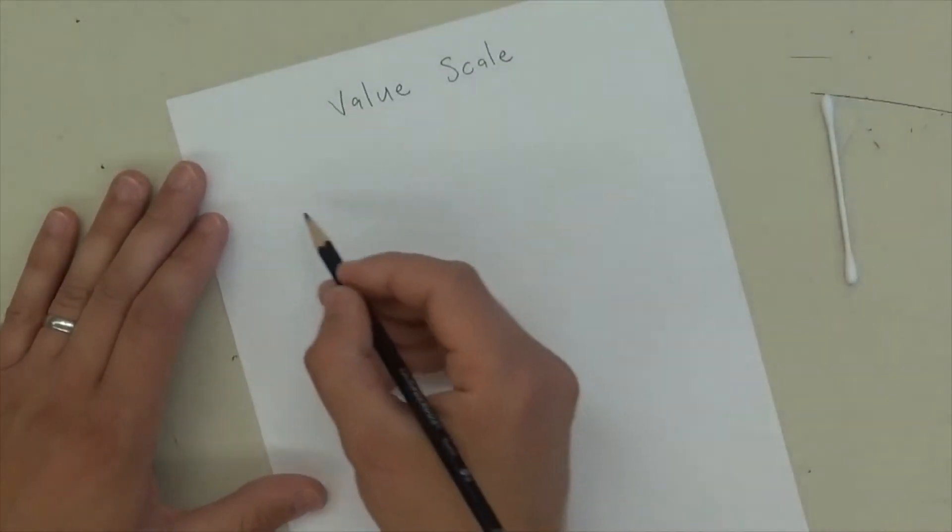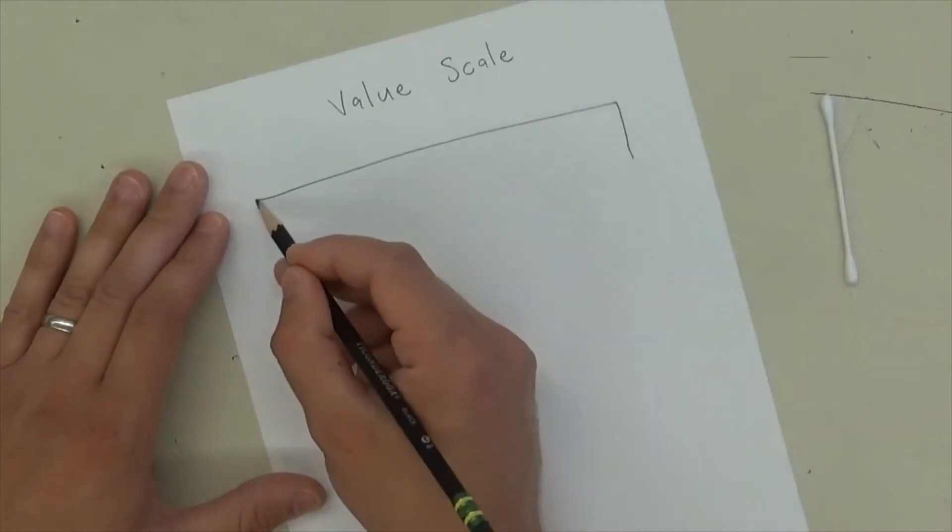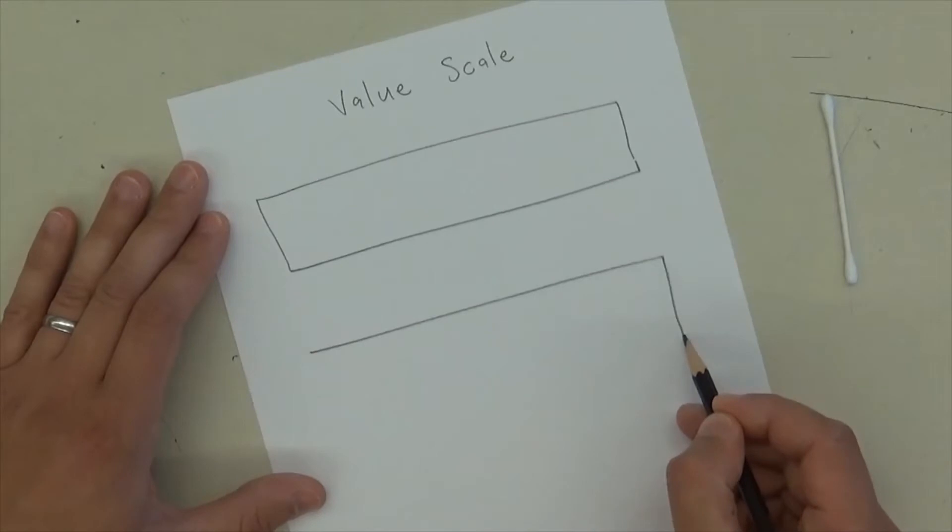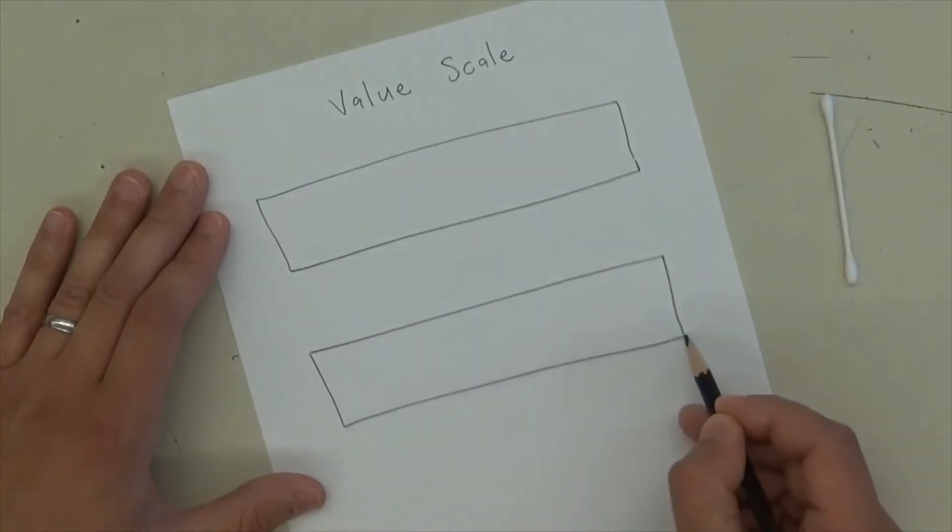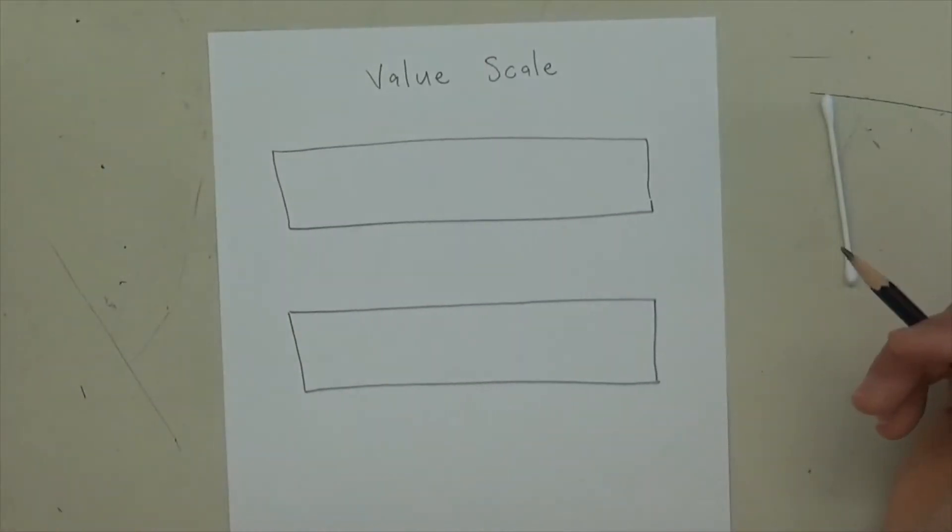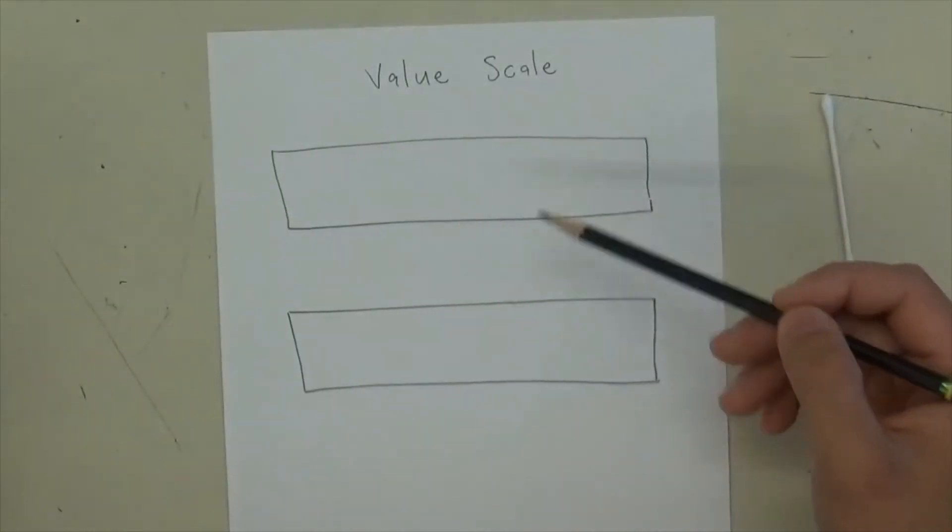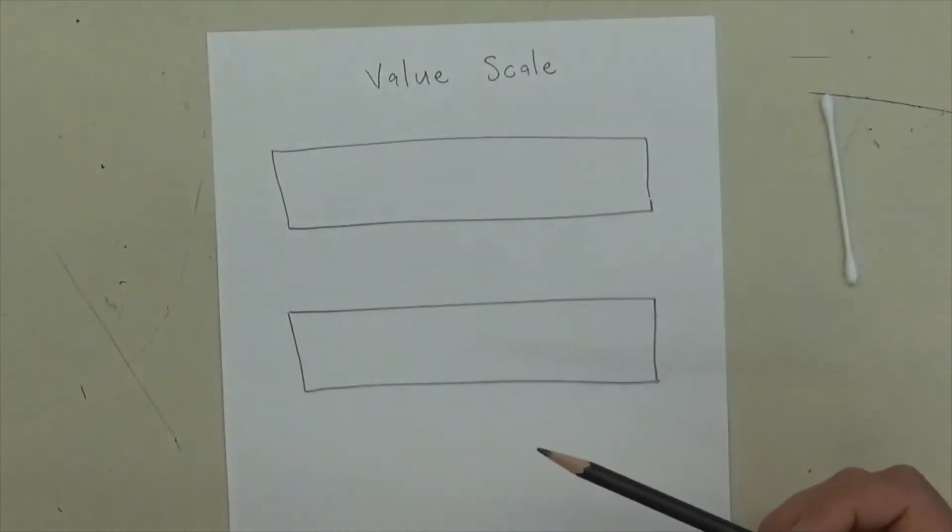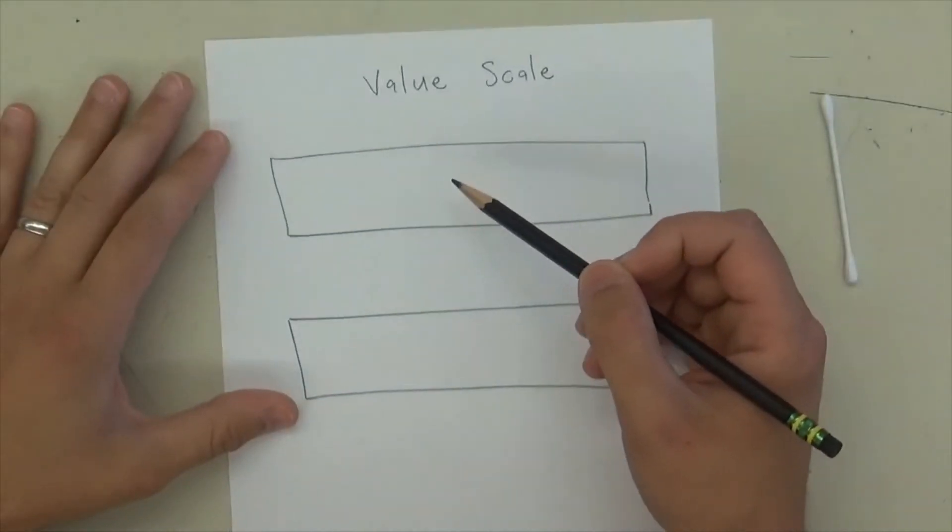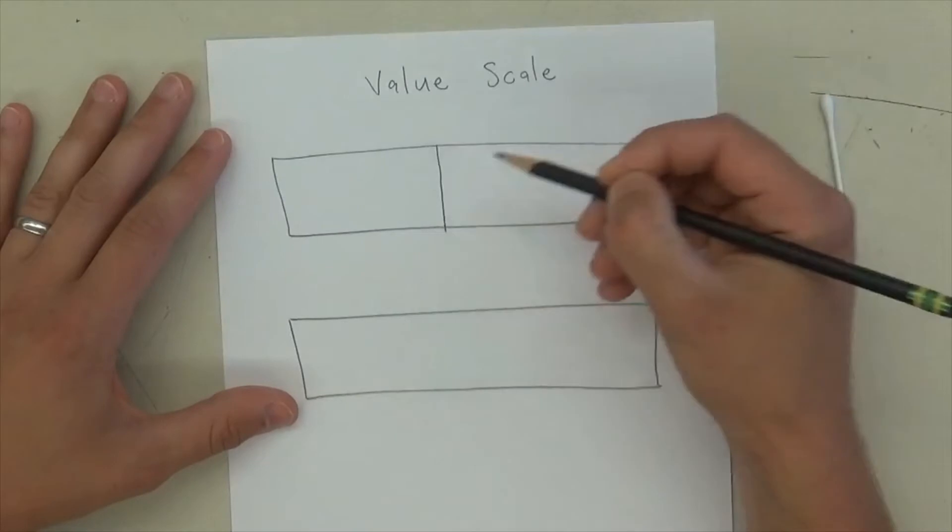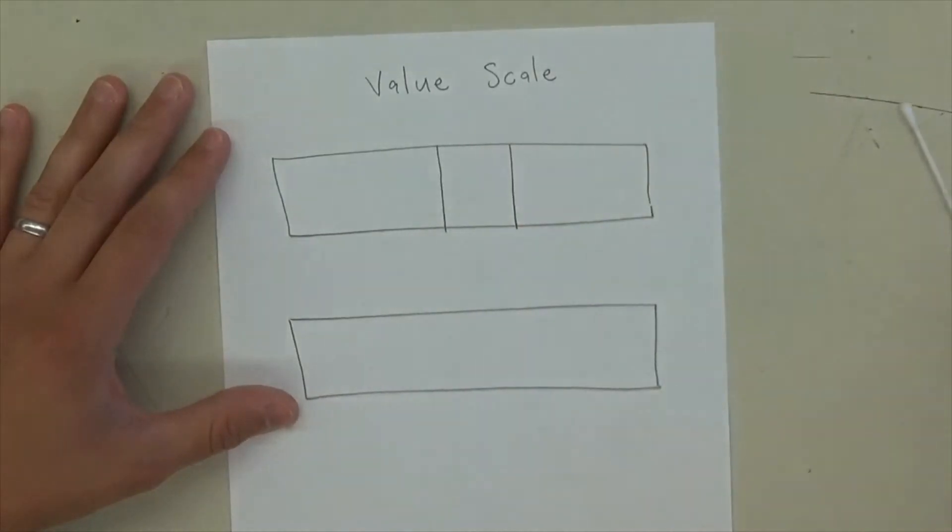And then we're going to do two, so we'll make two long boxes, just like that. And the top one I'm going to split into five boxes. So I like to do a square in the middle, like that,